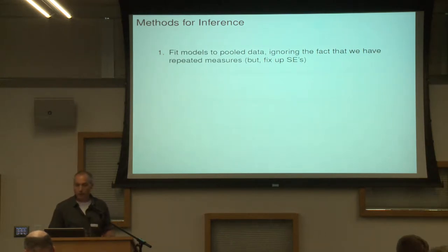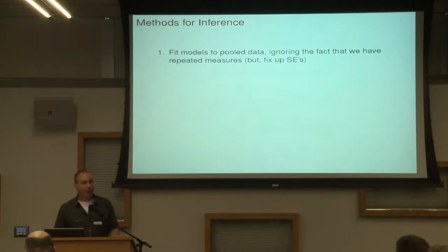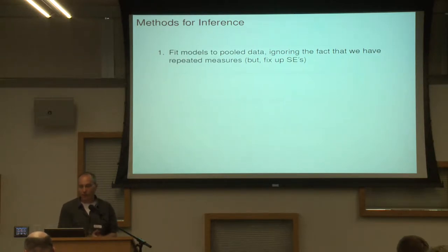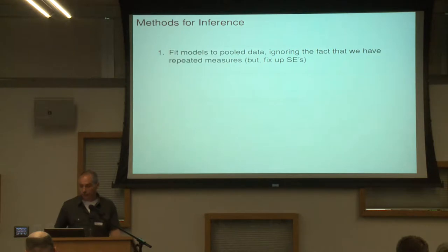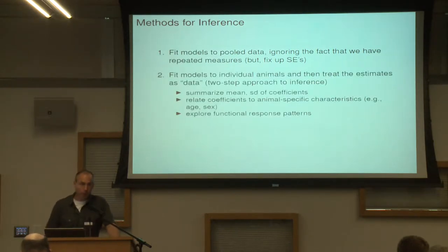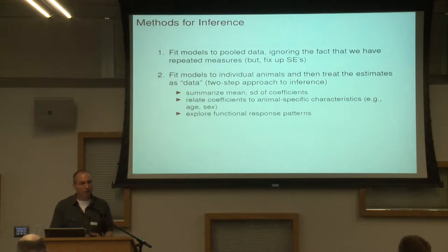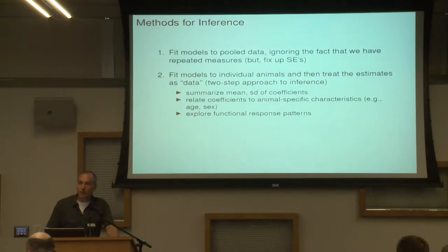One approach would be to just fit models to the pooled data, and maybe ignore the fact that you've got data from multiple animals, and then see if you can fix up the standard errors to actually recognize that you don't have independent data, but data that are clustered with several observations for each of several animals. Another approach is what you've seen already, which is fit a model to each individual animal, and then take those coefficients as summaries of the movement behaviors of each of those individuals, and then treat them as new data that you can analyze — a two-step approach.